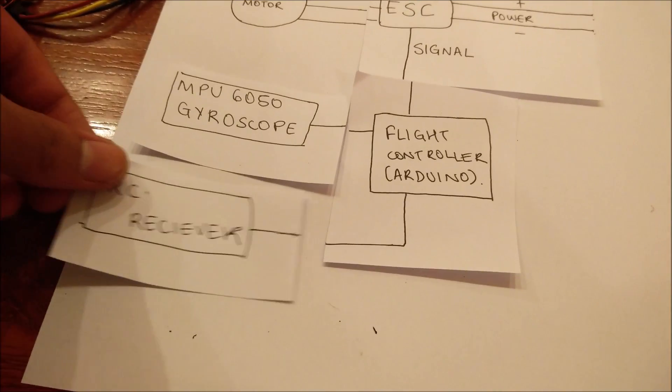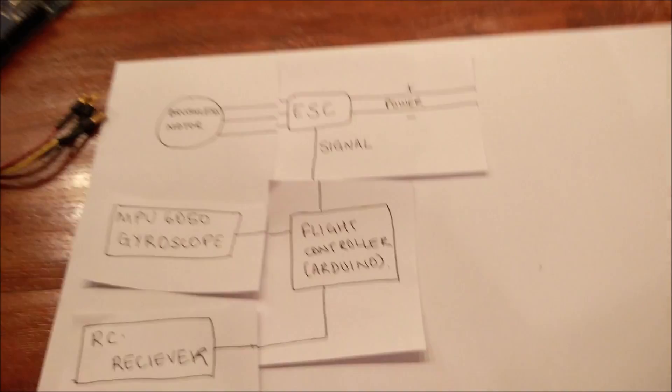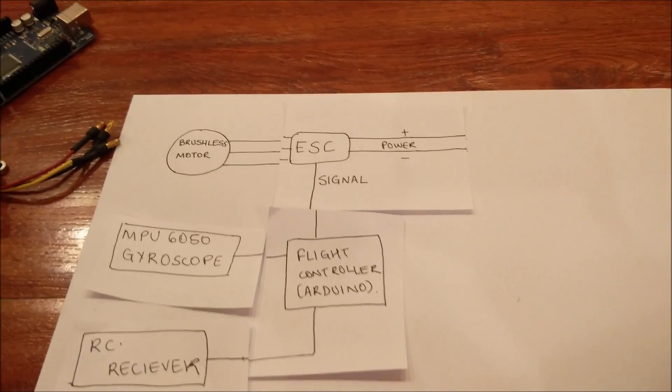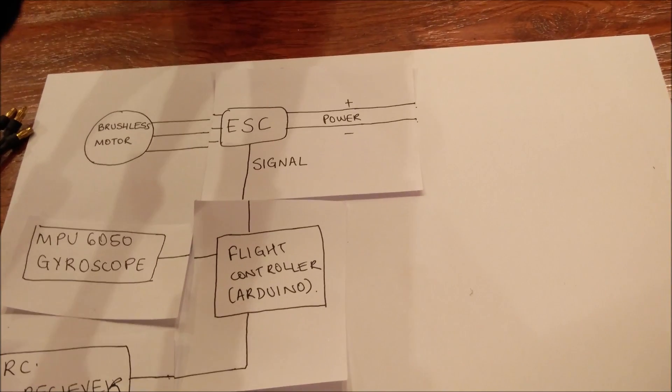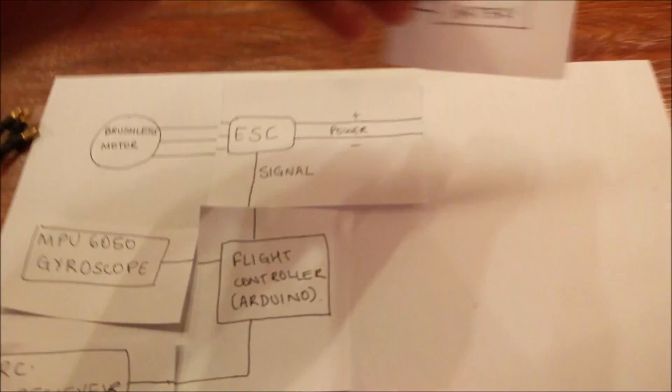And to get commands from the user, we have an RC receiver that also goes into the flight controller. This is what a receiver looks like. And here you have the last component, the battery.